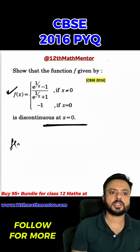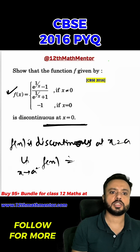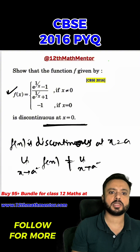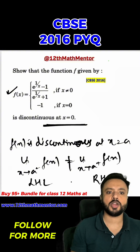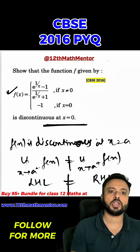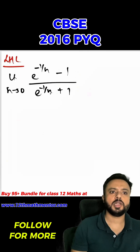f(x) is discontinuous at x equal to a when the limit as x tends to a minus of f(x) is not equal to the limit as x tends to a plus of f(x). This is also called LHL and RHL respectively. So basically we have to show that LHL and RHL are not equal at x equal to zero for this given function. First we are going to calculate LHL.